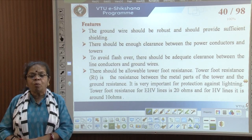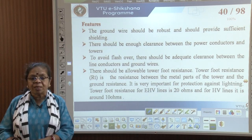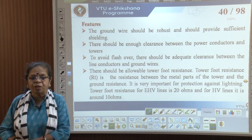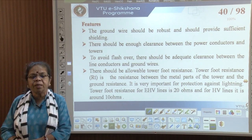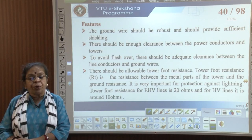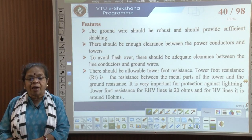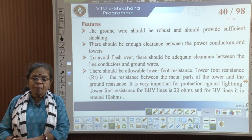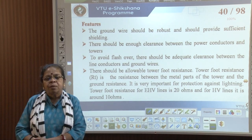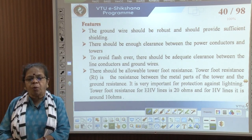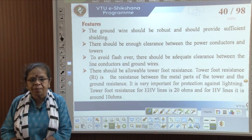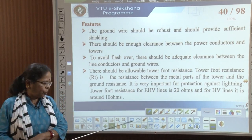There should also be allowable tower foot resistance — the resistance between the metal parts of the tower and the ground. This is very important for protection against lightning. For EHV lines, the tower foot resistance is around 20 ohms, and for HV lines it is around 8 to 10 ohms.